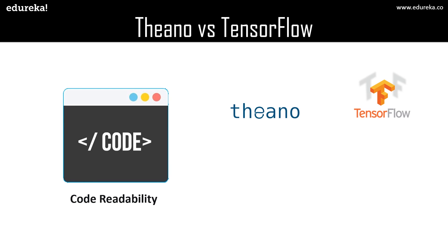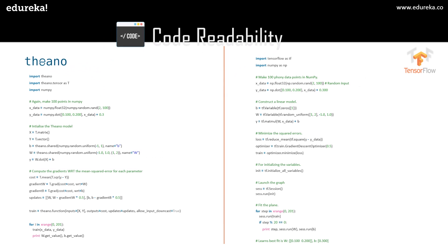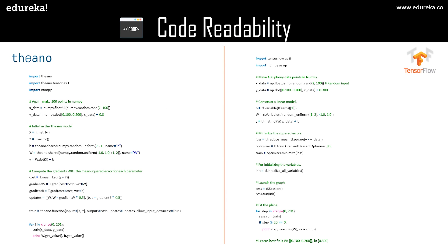Now if we talk about code readability, let's compare Theano and TensorFlow based on their code. I'm taking a basic example script where we will take some phony data and initialize the best fit for the data so it can predict future data points. As you can see, this is the code for Theano and this is the code for TensorFlow. Length-wise both codes are almost similar, with identically generated number arrays describing the input and the target output.